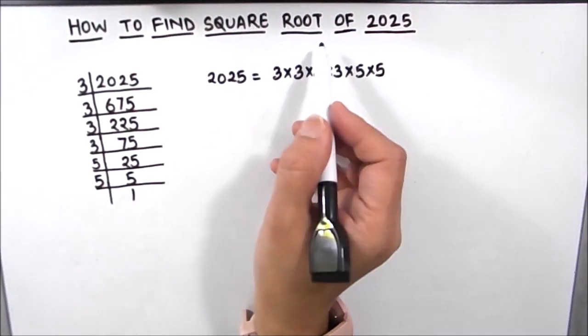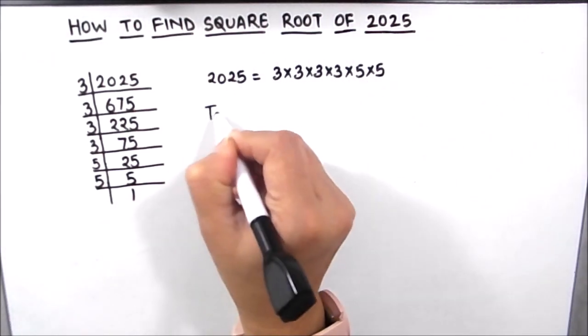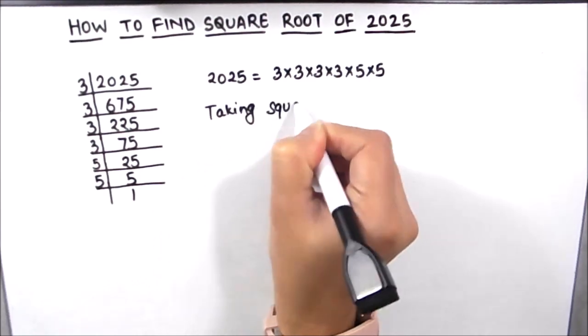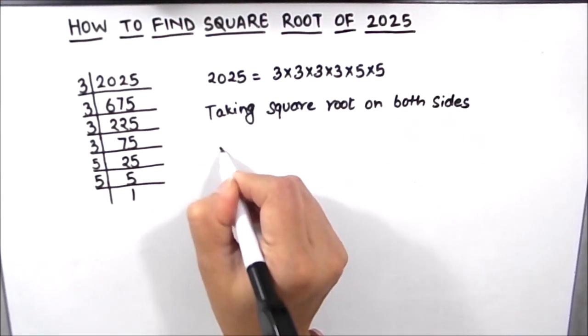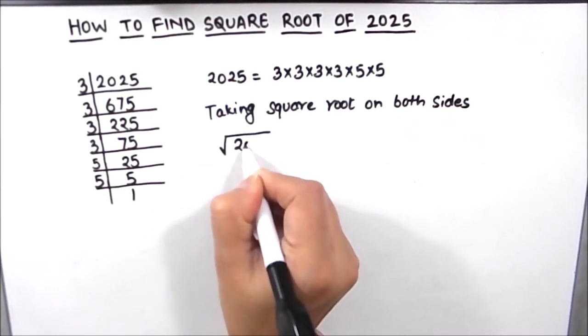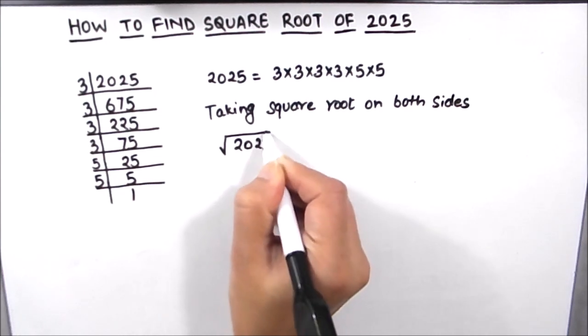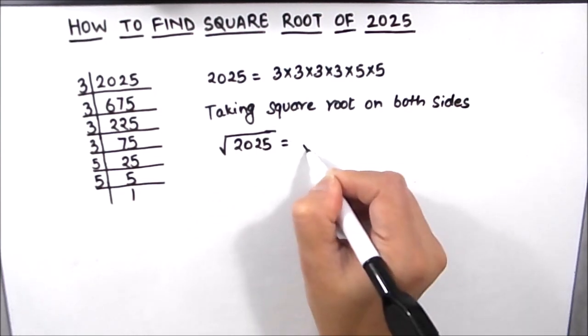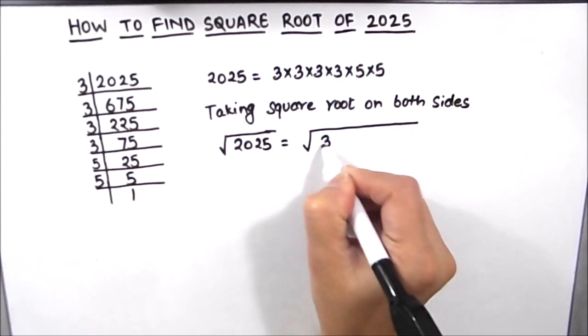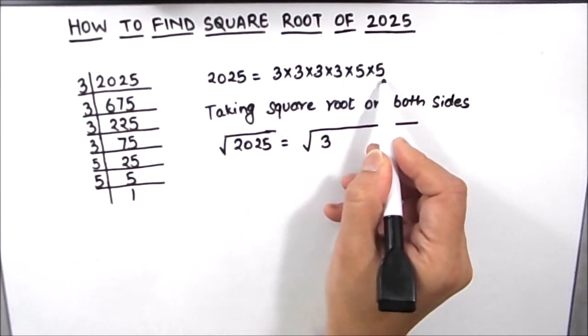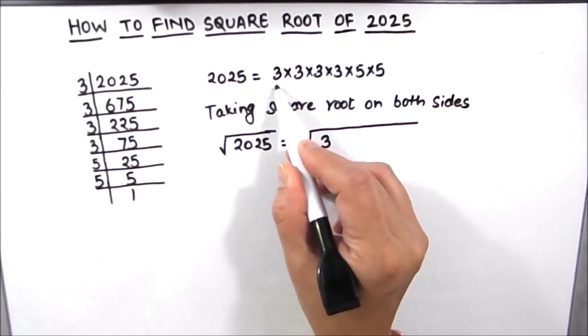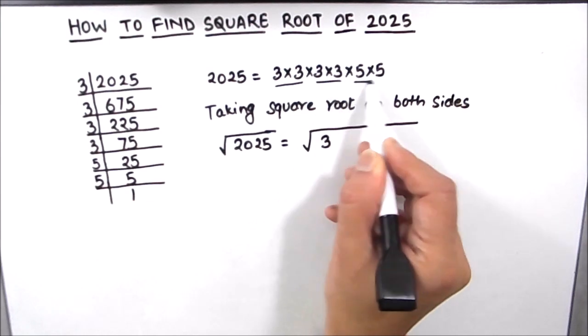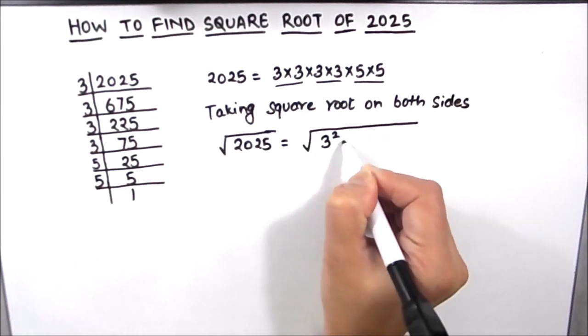As we have to find the square root, let's take the square root on both the sides. So here it will be square root of 2025 equals square root of these numbers in exponential form. So that will be 3 squared times 3 squared times 5 squared.